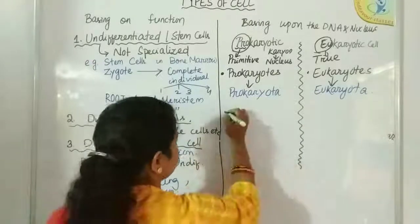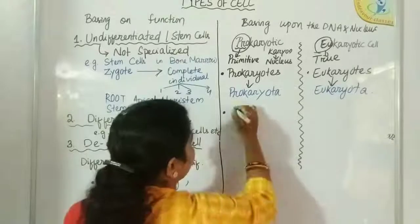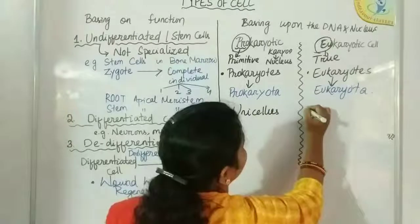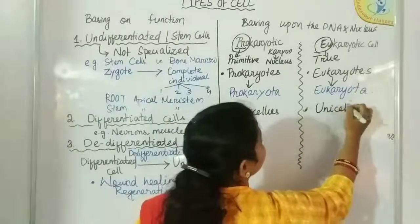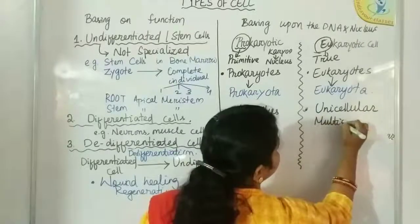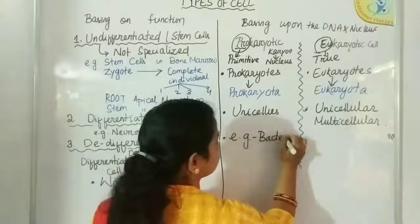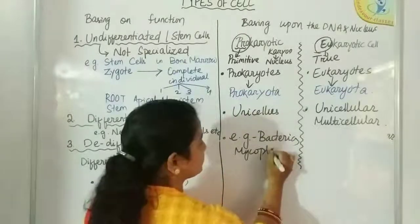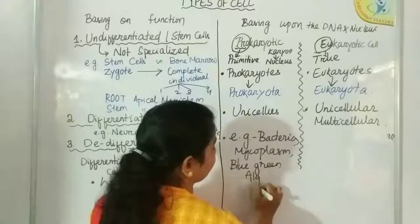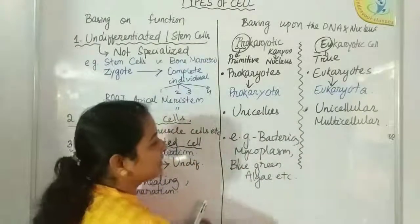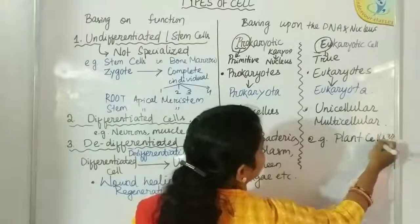Generally, prokaryotic organisms are unicellular — all prokaryotes are unicellular. But organisms having eukaryotic cells can be unicellular as well as multicellular. For example, bacteria, mycoplasma, and blue-green algae are examples of prokaryotic cells. Eukaryotic cells are present in plants and animals. So these are the types of cells.